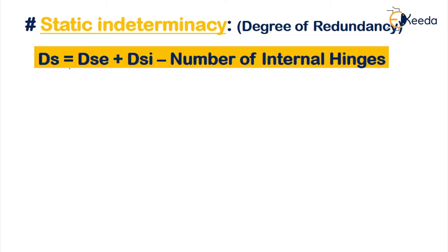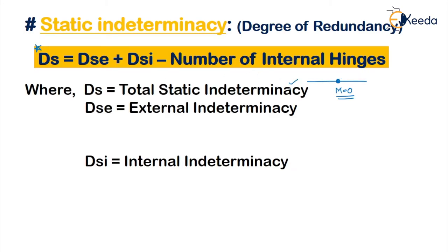The formula for static indeterminacy is: DS = DSE + DSI minus the number of internal hinges. Internal hinges are hinges within a member where the moment is zero and rotation is freely allowed. DSE is the external indeterminacy related to support reactions, and DSI is the internal indeterminacy related to the type of joint or frame configuration. If you know both and the number of internal hinges, you can find static indeterminacy easily.